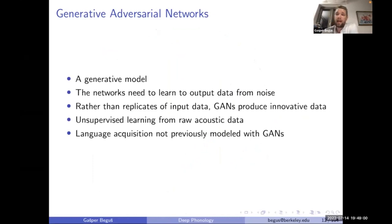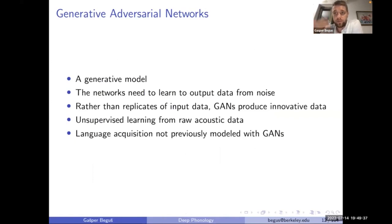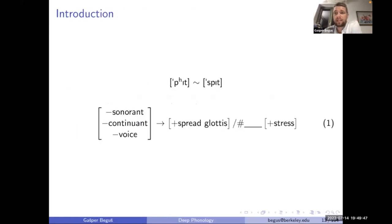Why are GANs appealing for language acquisition? It's a generative model — we can test both production and perception. As mentioned, they don't replicate but innovate, and those innovative outputs are very informative for cognitive modeling. It's fully unsupervised — the generator never directly accesses data; it's just trained to trick another network into thinking it's producing real data. To my knowledge, language acquisition has not been previously modeled with GANs.